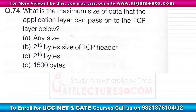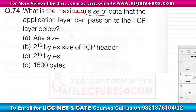In this question, question number 74: what is the maximum size of the data that the application layer can pass on to the TCP layer below? So in computer networks, what is the maximum size of data that the application layer can transfer to the transport layer?